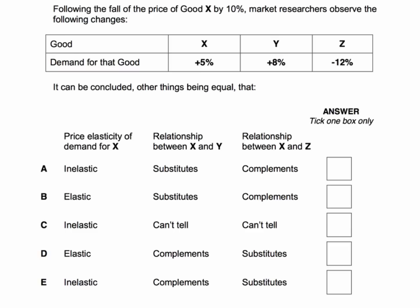Let's take the first column first. The price of X has gone down by 10%, demand has gone up by 5%. Thinking about the price elasticity of demand for X: percentage change in demand, 5, divided by percentage change in price, 10, gives 0.5, which is inelastic. So therefore, we can immediately eliminate answers B and D. The elasticity of demand for X is inelastic — it has to be A, C, or E.